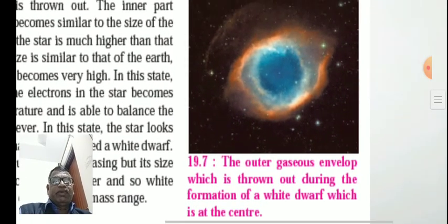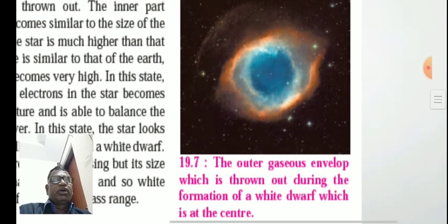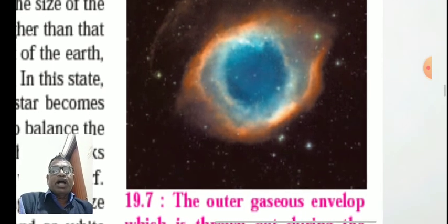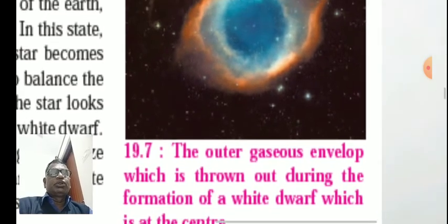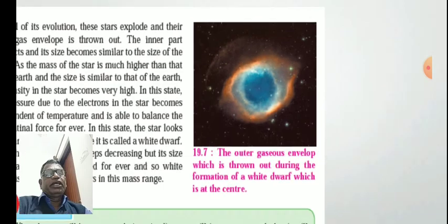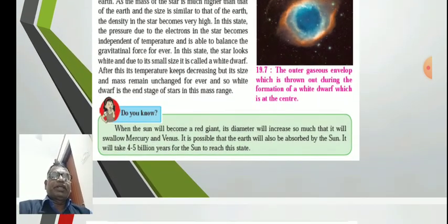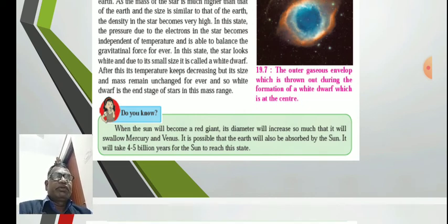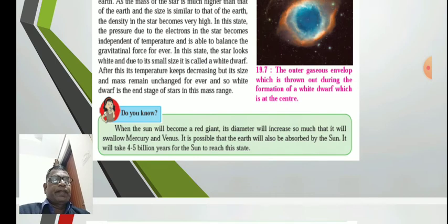The outer gaseous envelope which is thrown out during the formation of white dwarf is at the center. Do you know that when the sun will become a red giant, its diameter will increase so much that it is possible that it will swallow Mercury and Venus? It is possible that the earth will also be absorbed by the sun. It will take 4 to 5 billion years for the sun to reach this state.